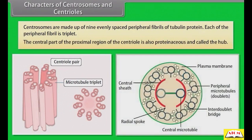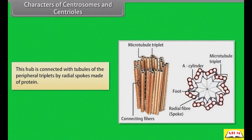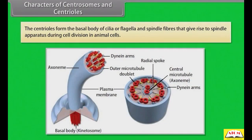The central part of the proximal region of the centriole is also proteinaceous and called the hub. This hub is connected with tubules of the peripheral triplet by radial spokes made of protein. The centrioles form the basal body of cilia or flagella and spindle fibers, which give rise to the spindle apparatus during cell division in animal cells.